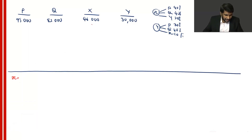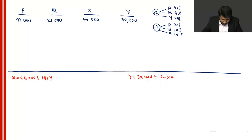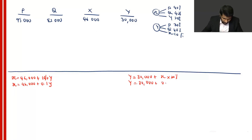Constructing the equations: X itself has a cost of 46,000. Y transfers 10% of its cost to X, so X = 46,000 + 0.1Y. Y itself has a cost of 30,000. X transfers 20% of its cost to Y, so Y = 30,000 + 0.2X. Always take the department you are considering and look at what the other department transfers to it.